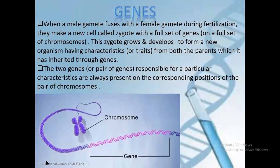When a male gamete fuses with a female gamete during fertilization, they make a new cell known as a zygote with a full set of genes. The zygote grows and develops to form a new organism having characteristics from both parents, which it has inherited through genes — and this gene is a unit of inheritance. The two genes responsible for a particular characteristic are always present on the corresponding positions of a pair of chromosomes.